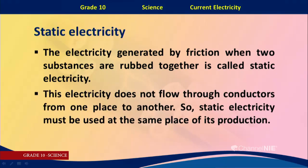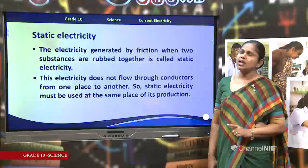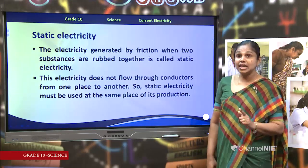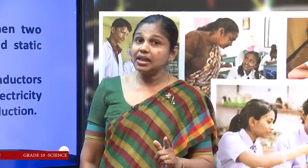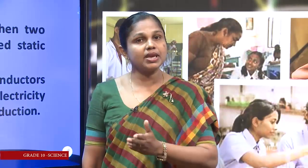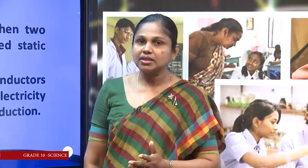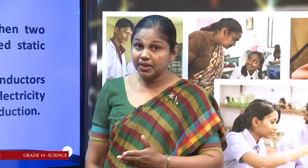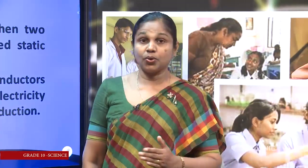Especially, this electricity does not flow through conductors from one place to another. So this electricity must be used at the same place of its production. This is the difference between current electricity and static electricity. Static electricity cannot be conducted through external conductors from one place to another. But current electricity can be transmitted from one place to another through conductors or cables.